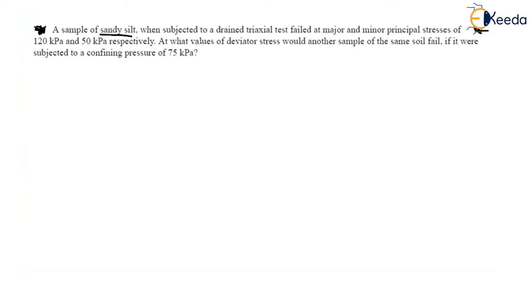The next question: A sample of sandy silt, when subjected to a drained triaxial test, failed at major and minor principal stresses of 120 kPa and 50 kPa respectively. At what value of deviator stress would another sample of the same soil fail if subjected to a confining pressure of 75 kPa? The soil type is sandy silt and the test is a drained triaxial test.